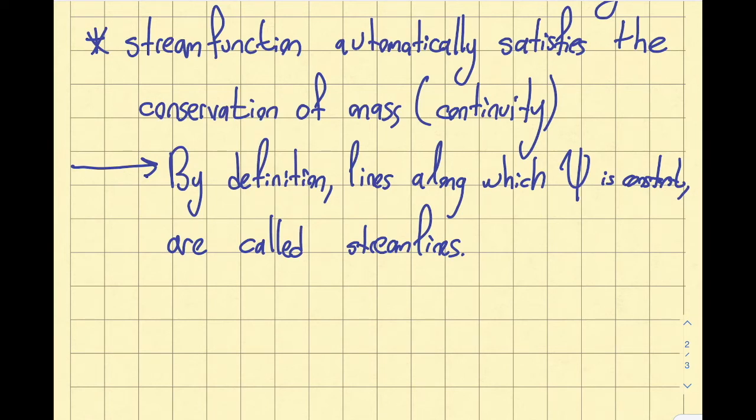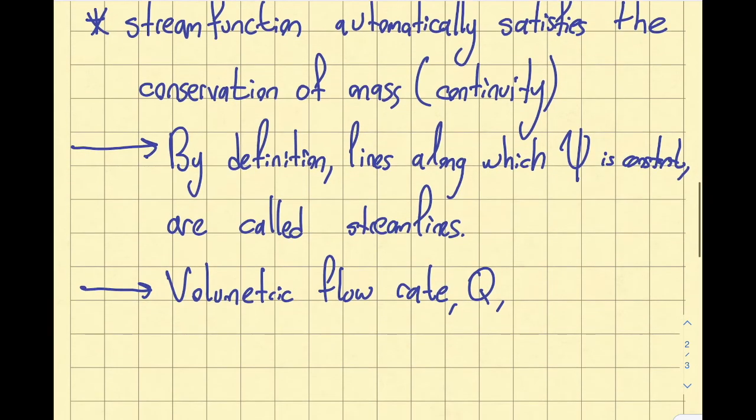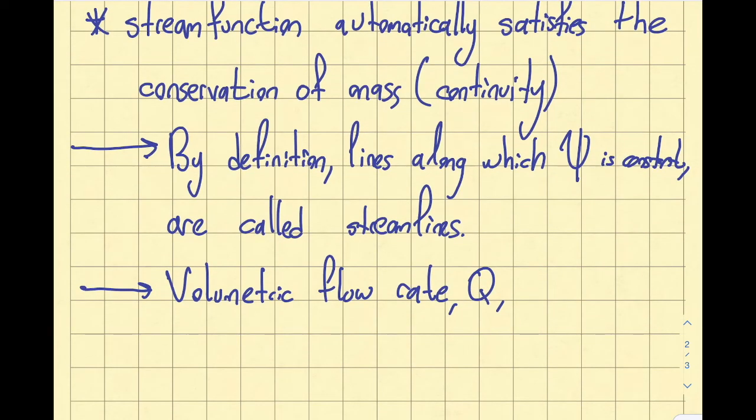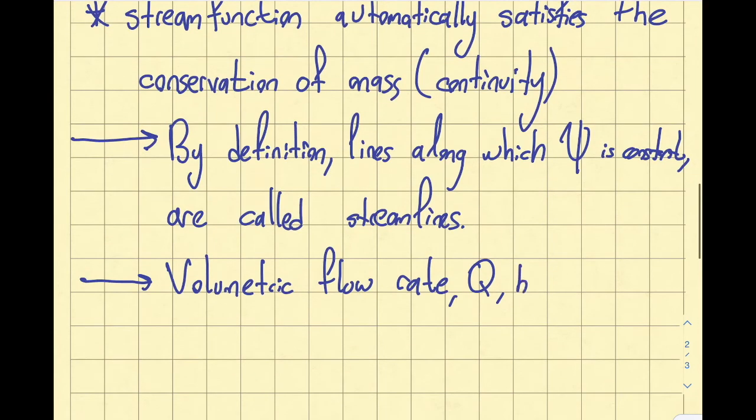One important topic before I finish this particular module is the volumetric flow rate. If you remember from our earlier conversations, we talked about this, the symbol being Q. The volumetric flow rate is obtained by velocity times area. The question is, what is the volumetric flow rate between two streamlines?